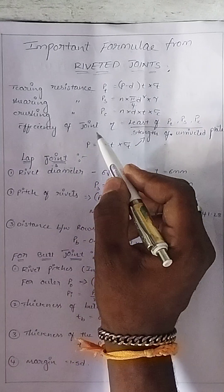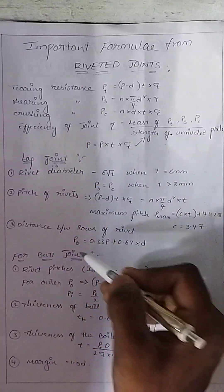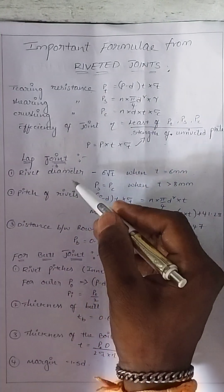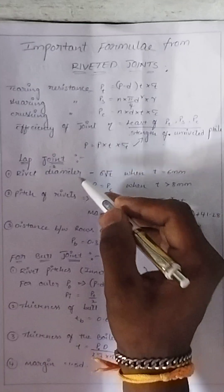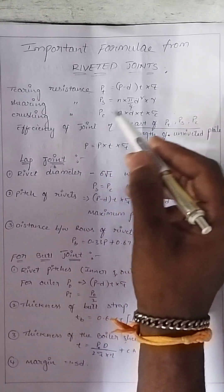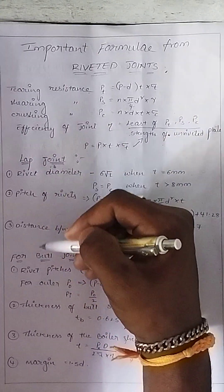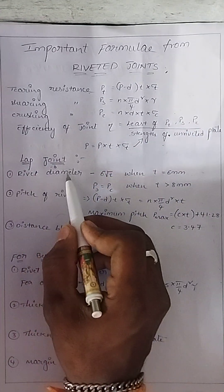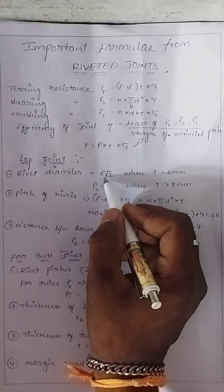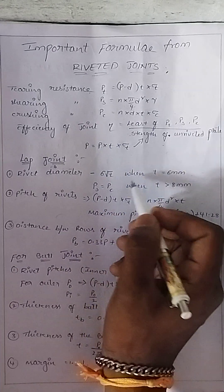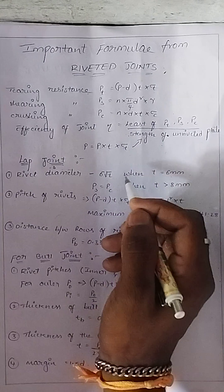There are two main types of joints: first is lap joint, and second is butt joint. The rivet diameter formula is 6 root T (6√T), and when T is equal to 6 mm, the thickness of the plate is 6 mm.